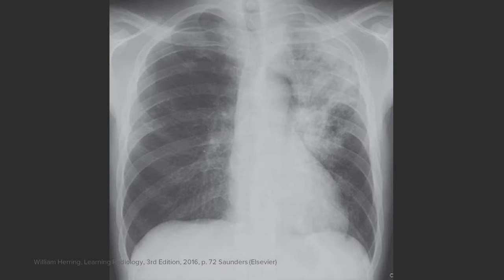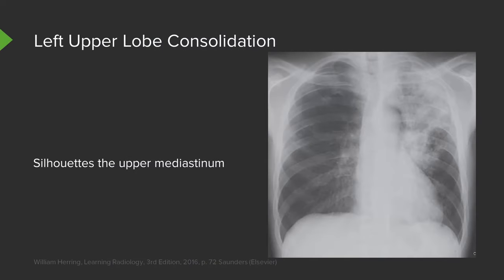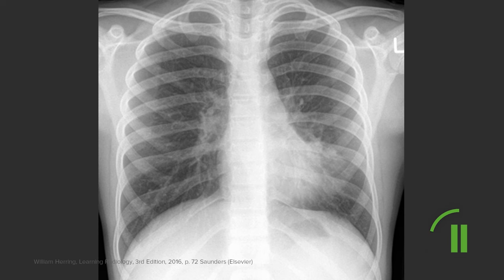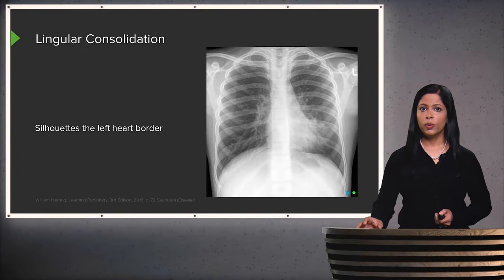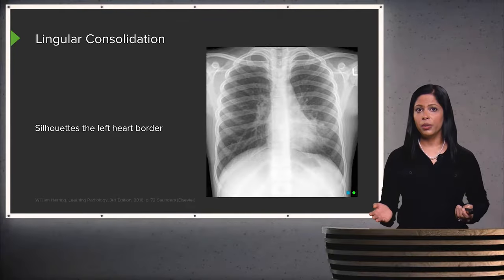This is an example of left upper lobe consolidation, which silhouettes the left side of the upper mediastinum, and you can also see some classic signs of air bronchograms. Here we have silhouetting of the left heart border — the right heart border is clearly visualized, while the left heart border becomes hazy. This is an example of a lingular consolidation. The lingula is a portion of the left upper lobe located in the same anatomical position as the right middle lobe, though it is considered part of the left upper lobe.